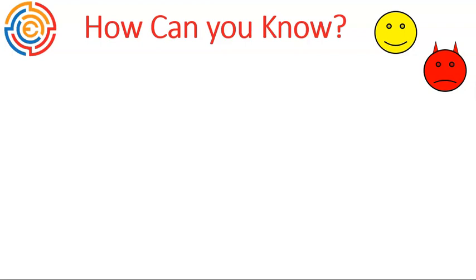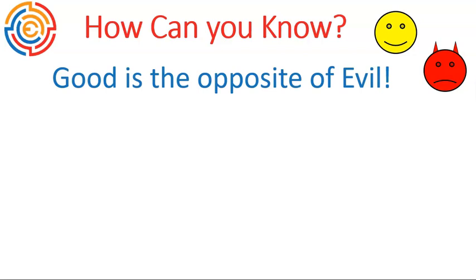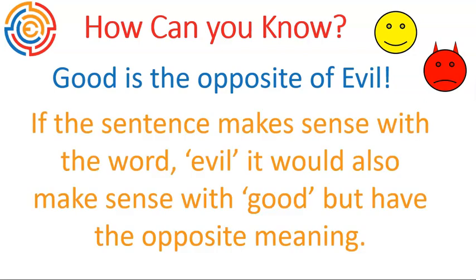A couple of things. First off, we're going to talk about the word good, and then we're going to talk about the word well. The word good — it is the opposite of evil. Good and evil are opposites. So basically, if the sentence would make sense with the word evil, it would also make sense with the word good, but they'd have opposite meanings. I'm going to show you an example of this so that it makes a little bit more sense.